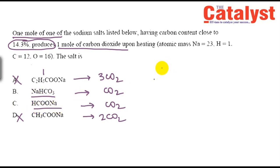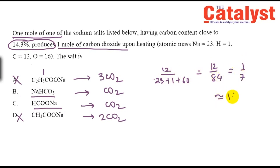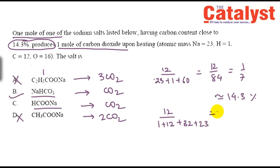If I calculate the carbon percentage for sodium formate, it is 12 divided by (1 + 12 + 32 + 23), which is 12 by 68, approximately 17.65%. So our answer is sodium bicarbonate, option B. It gives one mole of CO2 and has 14.3% carbon content in total.